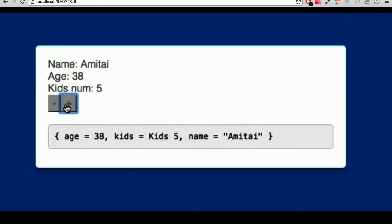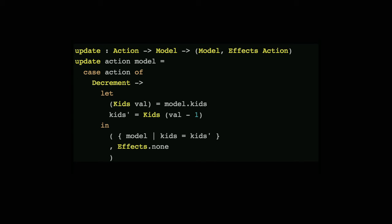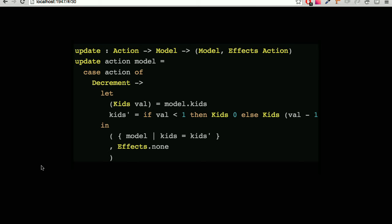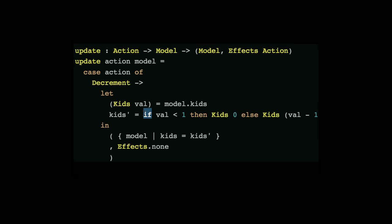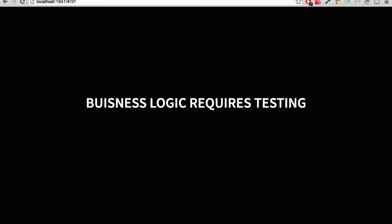Indeed, this is before the change — we can see that when we hit Decrement we're just decrementing without checking anything. The only change that we need to do is add an if statement: if the value is reaching a certain amount, we'll just return Kids zero. The same thing for the Increment.